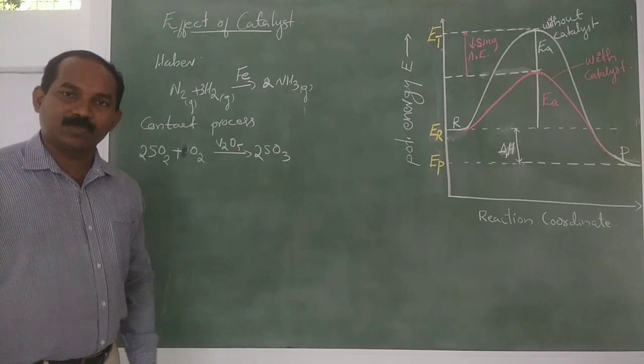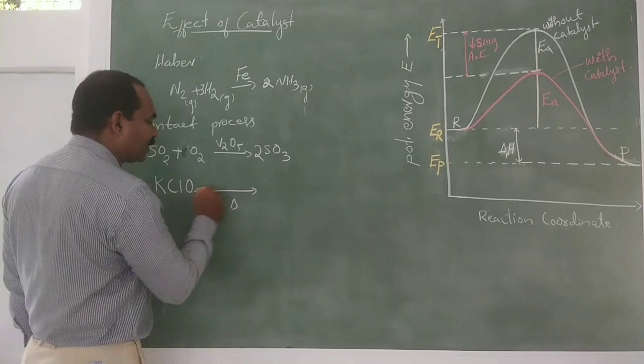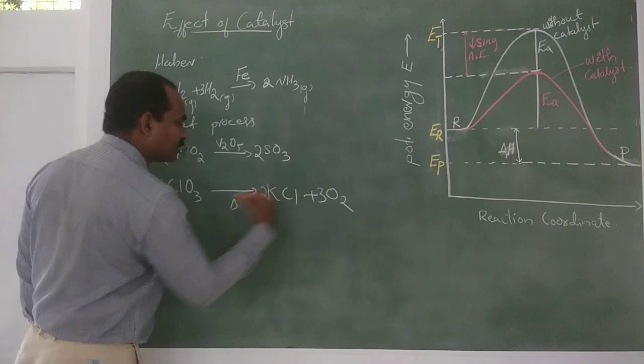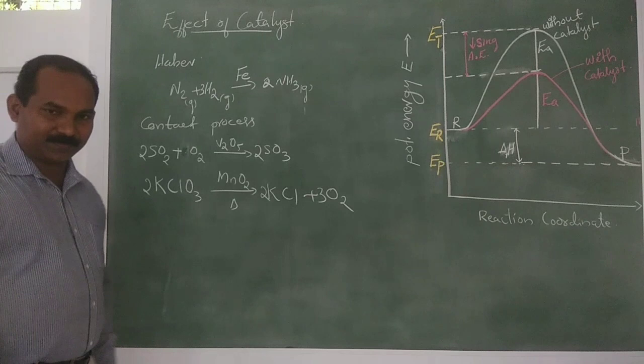Another example: in the decomposition of potassium chlorate, KClO3, the reaction is enhanced by using manganese dioxide as a catalyst. Balancing the reaction: 2KClO3 gives 2KCl plus 3O2. The rate of the reaction increases by adding manganese dioxide.